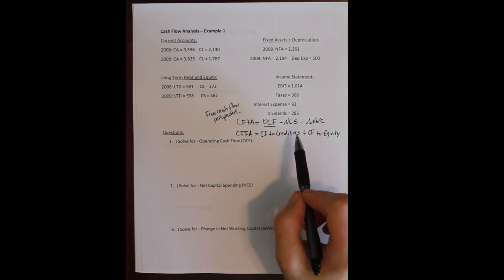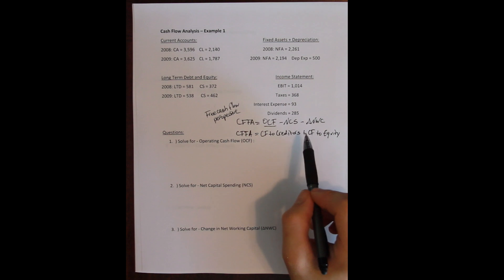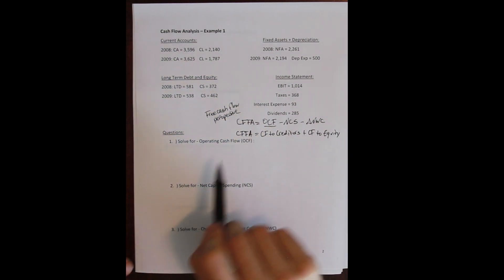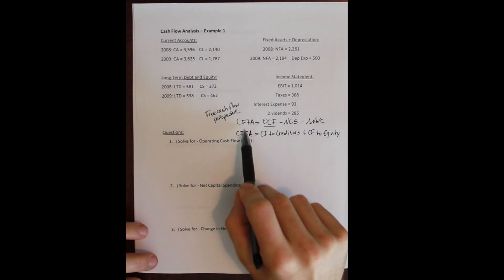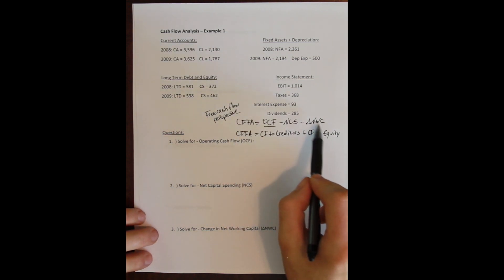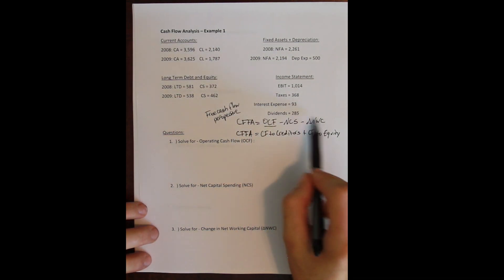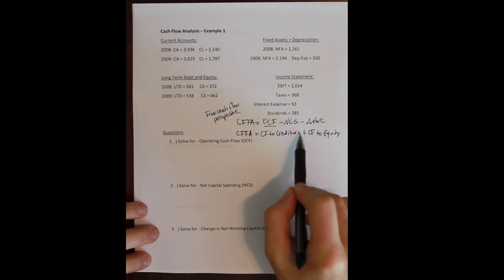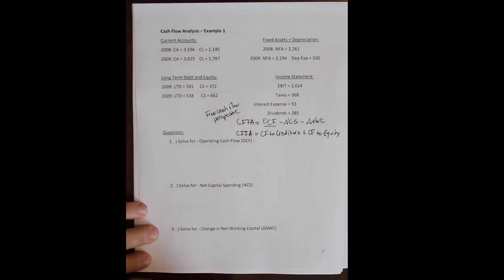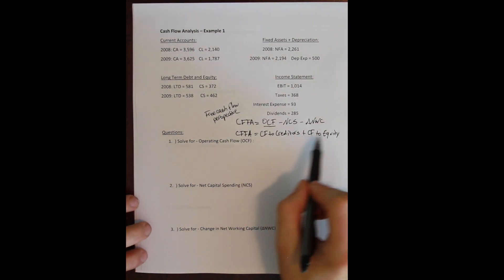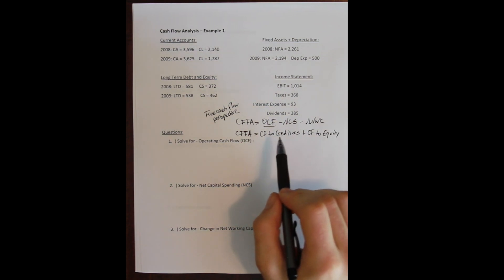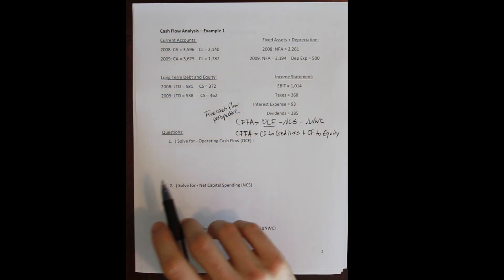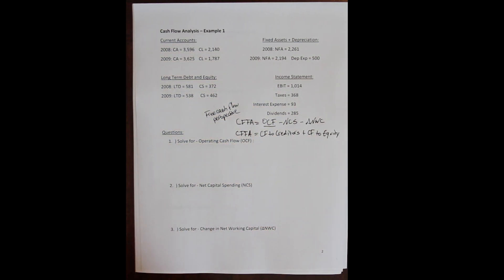As a firm matures, cash flow from assets more commonly becomes positive — the firm runs smoothly, generates enough cash flow, and pays back its investors. This is a very central identity in finance and will be used throughout the course, particularly when we discuss how to value companies.